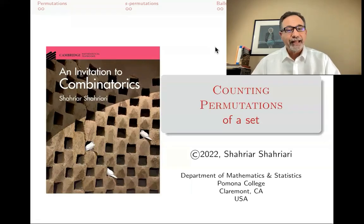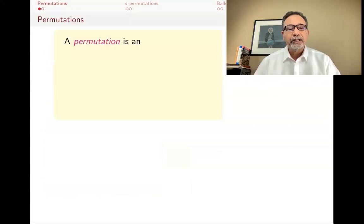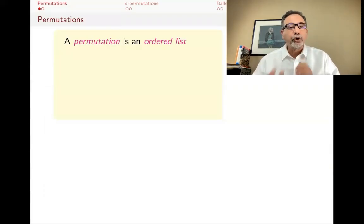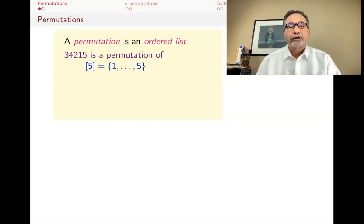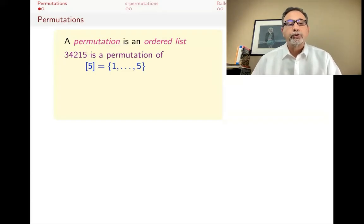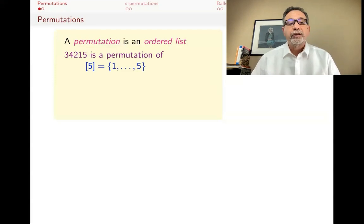The topic of this lecture is counting permutations of a set. A permutation is just an ordered list, a bunch of things where the order matters. For example, the number 34,215 is a permutation of one through five. There's one, two, three, four, five in there, but they've been written in a different order, and the order matters.